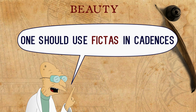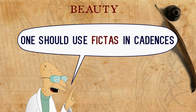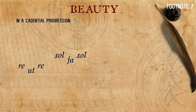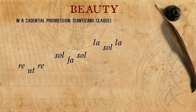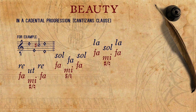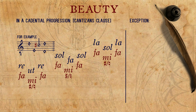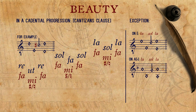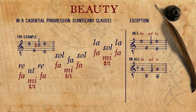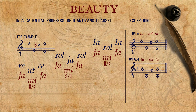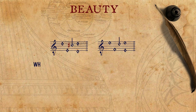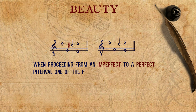In many sources we are told that one should use fictas in cadences. Some sources were more specific than others, and say that in a cadential progression with the solmization syllables RE UT RE, SOL FA SOL, and LA SOL LA — what we call cantizans clause — the syllables should be sung as if they were FA MI FA, that is, the middle note should be sharpened. An exception to the rule, however, is that when LA SOL LA is on the note E, or on the note A in Cantus Mollis when there is a flat in the system, it should not be sharpened, as in such cases the tenorizans already proceeds by a semitone.